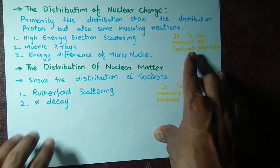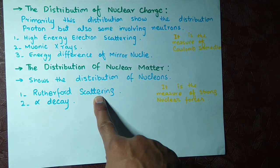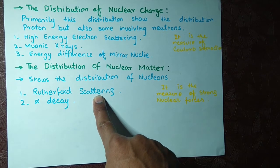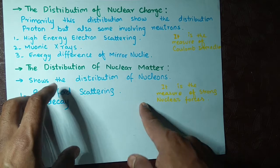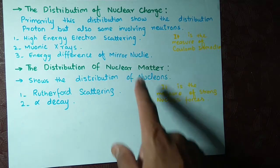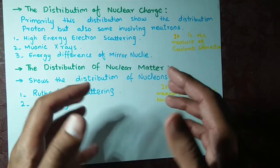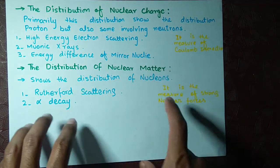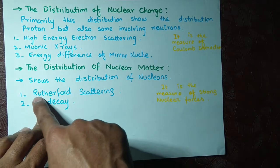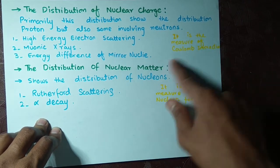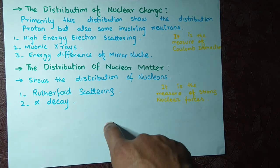Rutherford scattering and alpha decay are related to each other. When you give more energy to the alpha particle — when you accelerate it from a source — it gains enough energy to enter the nucleus. Once inside, it gets trapped by the strong nuclear force, which holds it together. When it escapes from the nucleus, that phenomenon is known as alpha decay. So the alpha particle goes into the nucleus and its escape is known as alpha decay.